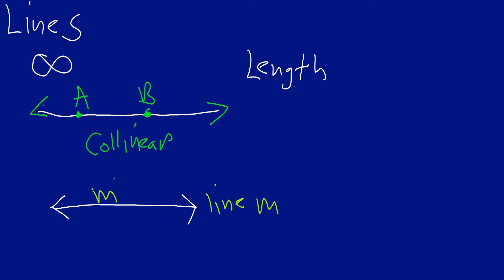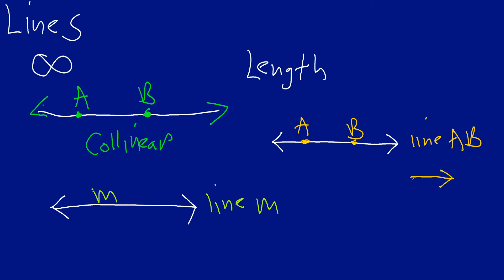We can also name a line using points on it. Over here I have a nice straight line, and I put points A and B on it. We can call this line AB — notice the use of capital letters — with a double-arrow symbol above it. We can also switch the order and call it line BA, using the same symbol. These are all shorthand for the same thing.